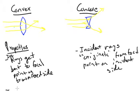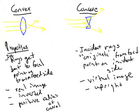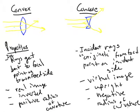A convex lens is usually used to form a real image and a concave lens can only form a virtual image. The real image will be inverted and the virtual image will be upright. The convex lens has a positive radius of curvature going back to the lens maker equation. The concave lens has a negative radius of curvature. These are the basic properties.